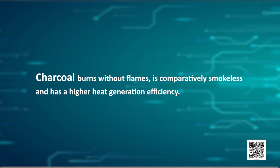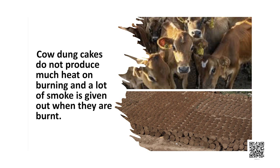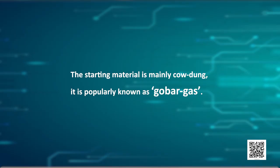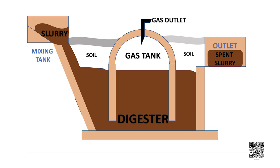Charcoal burns without flames and is comparatively smokeless and has a higher heat generation efficiency. Similarly, cow dung and various plant materials like the residue after harvesting crops, vegetable waste, and sewage, if decomposed in the absence of oxygen, give a gas called biogas.